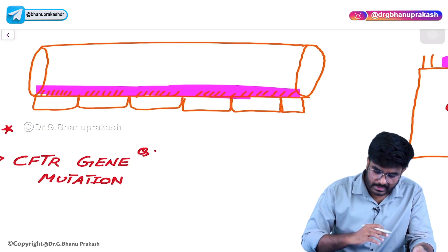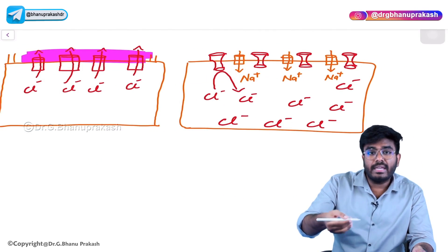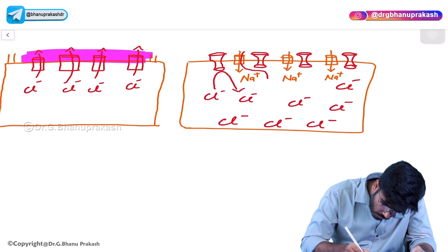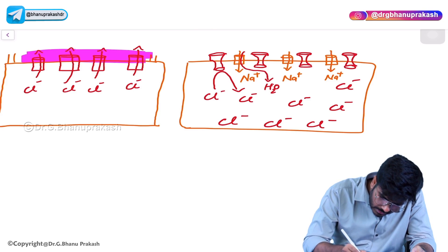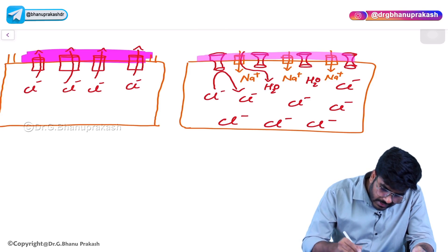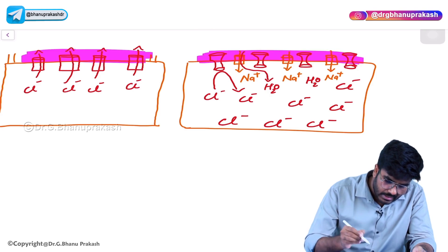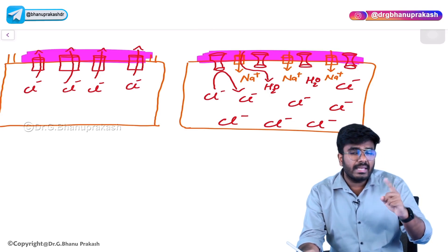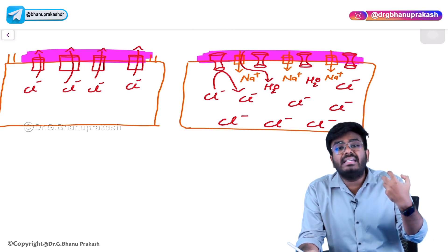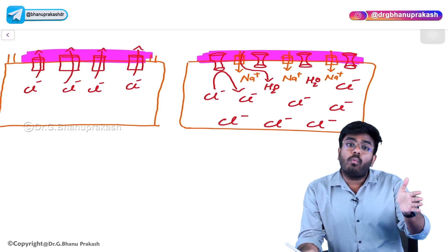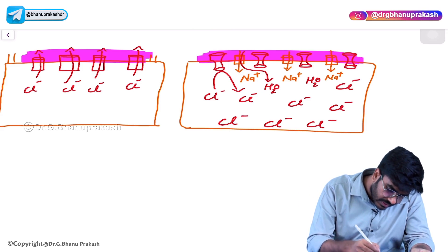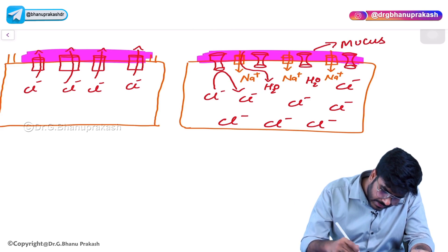When the sodium is coming into the cell, all the water is going to follow the sodium - water is also coming into the cell. Whenever water comes along with the sodium, the mucus is going to become heavily concentrated. Mucus is getting so much concentrated. Cilia are not able to clear the mucus because it is getting more concentrated and thickened, like a very thick syrup. Because water follows sodium into the cell, the mucus becomes a thick plug and mucus plugging will happen.